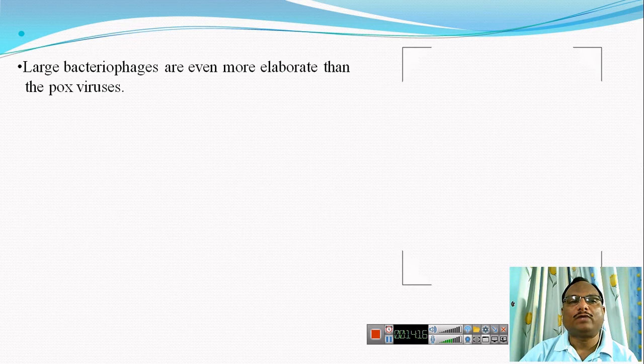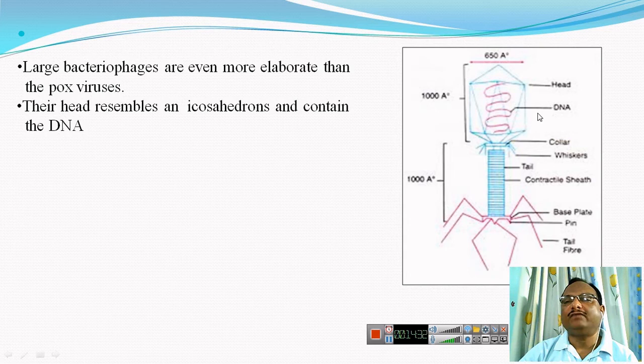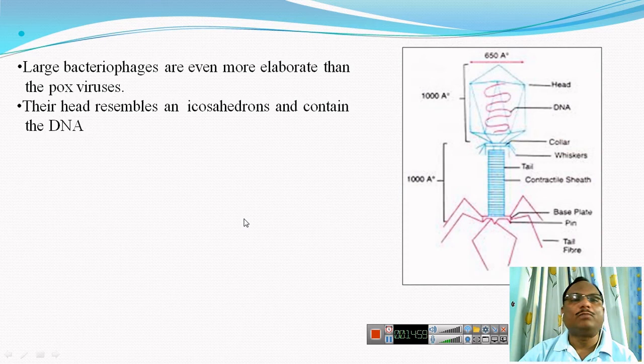Another important group of complex viruses is the large bacteriophages. The most common representative is the coli phages, which are of two types: T-odd phages and T-even phages. The T4 bacteriophage is a T-even phage whose head resembles an icosahedron and has a tail region resembling a helical capsid. It is a combination of an icosahedral head and a helical tail, and therefore can be called a complex virus.